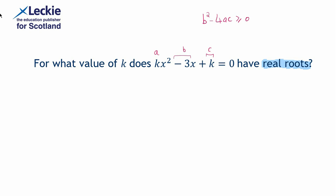So let's see what we can do here. I think we should write down that we know for real roots, we know the condition on the discriminant. We know that b squared minus 4ac needs to be greater than or equal to 0, and then we can start filling in our values.